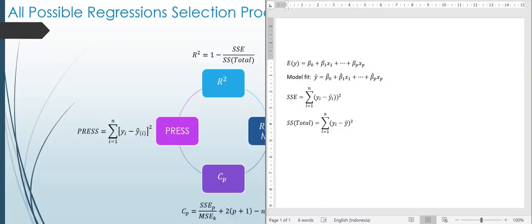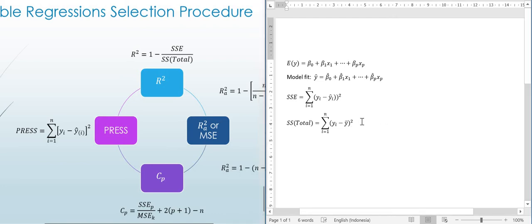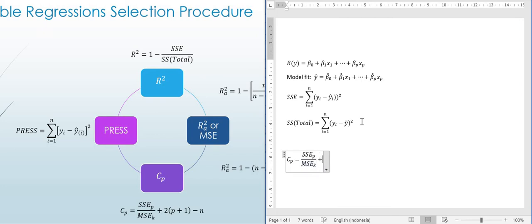So we will see how the CP works, what it means and how it works. Let me copy the formula first. CP is given by: the sum of squared errors for the p-variable model (SSE_p) divided by the mean squared error for the complete k-variable model (MSE_k), plus 2 times p plus 1, minus n.